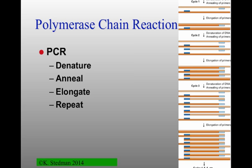Seeing all the bands on a gel is useful, but usually you want to detect individual specific ones — that's what Southern blots and Northern blots are for, which we'll talk about in Wednesday's lecture. The last thing to talk about today — and hopefully this is all review — is the other process that above and beyond restriction endonucleases has really revolutionized molecular biology: the polymerase chain reaction, or PCR. Kary Mullis got the Nobel Prize for coming up with this. It's an incredibly straightforward process that has revolutionized molecular biology, forensics, and diagnostics.